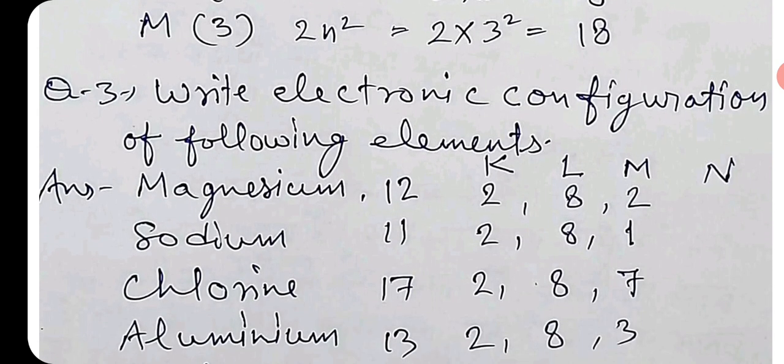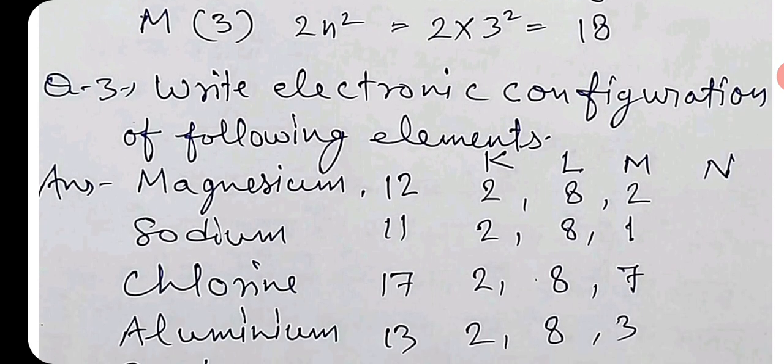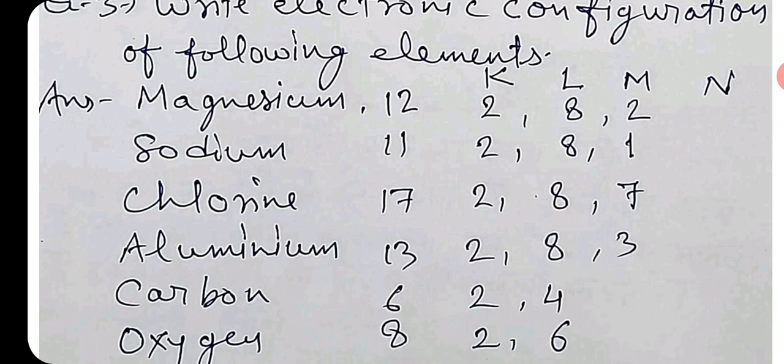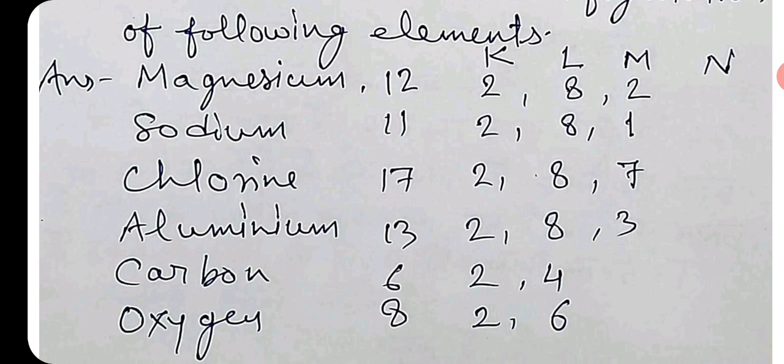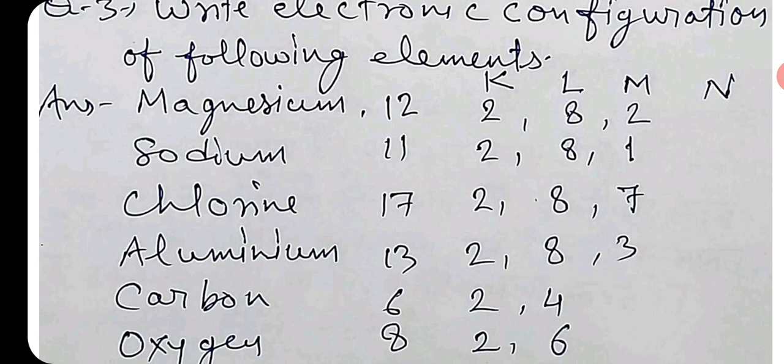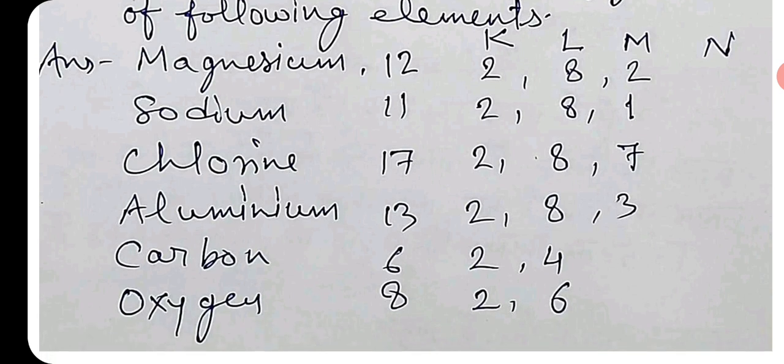Question number 3, electronic configuration of following elements. Magnesium में 12 है तो 2, 8, 2. Sodium 11, 2, 8, 1. Chlorine 17, 2, 8, 7.